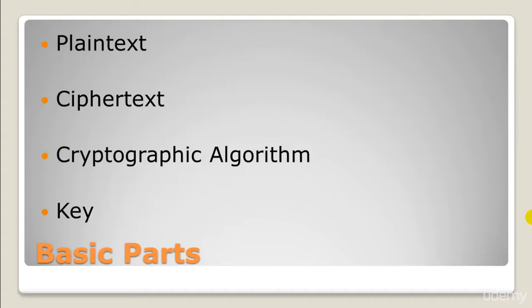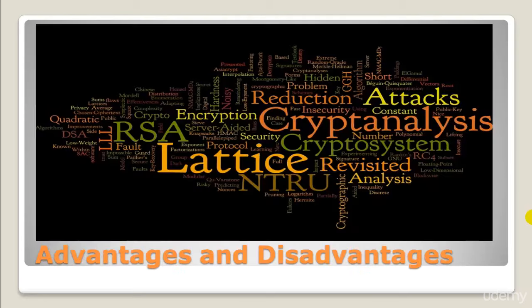The final part is the key — a mathematical value, formula, or process that determines how a plaintext message is encrypted or decrypted. The key is the only way to decipher the scrambled information. These are the four parts of cryptography.